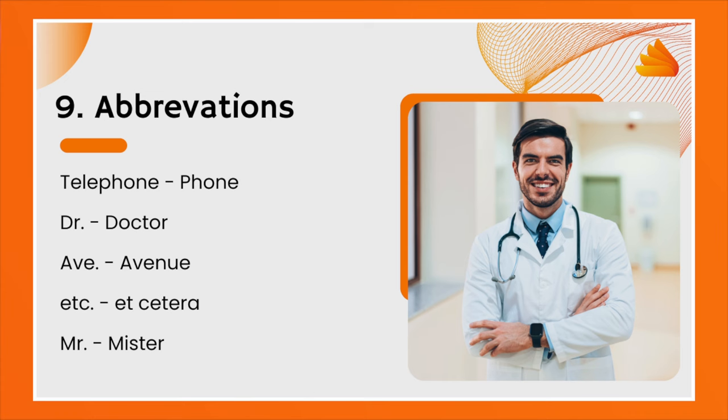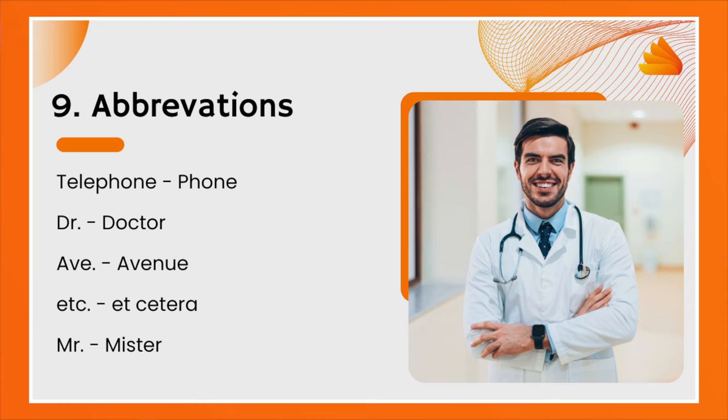We all know what abbreviations are — you simply use words in a short form as a unique way to create new words. For example, from 'telephone' we got 'phone'; 'DR' for doctor; 'AVE' for avenue; and 'MR' for mister. That is how we create new words using abbreviations.